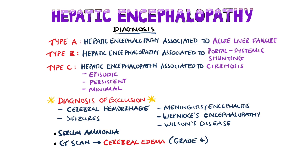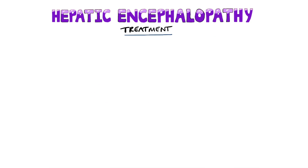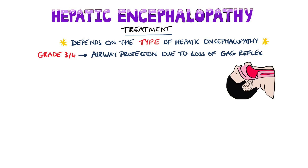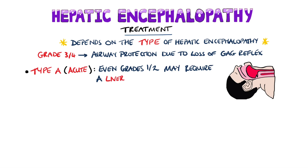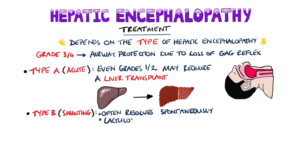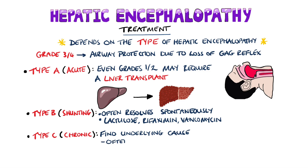Once the diagnosis of encephalopathy is made, you look further into the underlying causes. Generally, stages 3 or 4 will need protection of the airway due to risk of obstruction from loss of the gag reflex. For acute hepatic encephalopathy (type A), even stages 1 or 2 may require a liver transplant. Type B patients usually resolve spontaneously or are given lactulose and antibiotics like rifaximin or vancomycin. In type C patients, management is centered around finding the underlying cause — commonly infection — so empirical antibiotics are started.